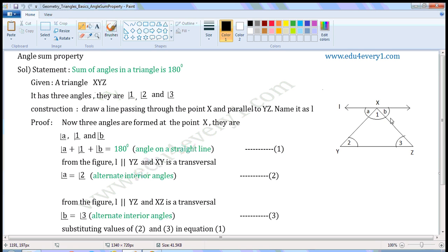All these three angles together form a straight angle. So, Angle A plus Angle 1 plus Angle B is equal to 180 degrees. Angle on a Straight Line. Mark it as equation 1.